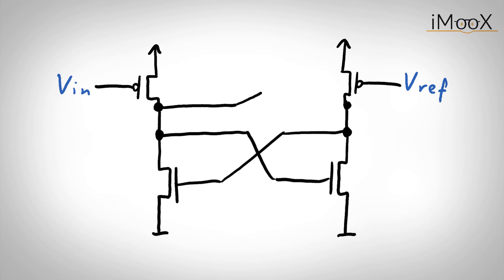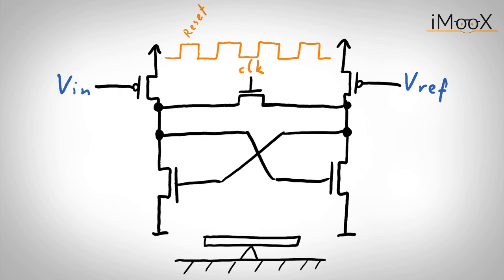This is done by adding a switch in between the two voltage nodes, in our case by adding a simple NMOS transistor. To drive the switch, we can use a clock signal. Whenever the signal is high, the latch is in the reset phase and as soon as the clock goes to low, the switch is opened and the latch starts to flip or to flop.